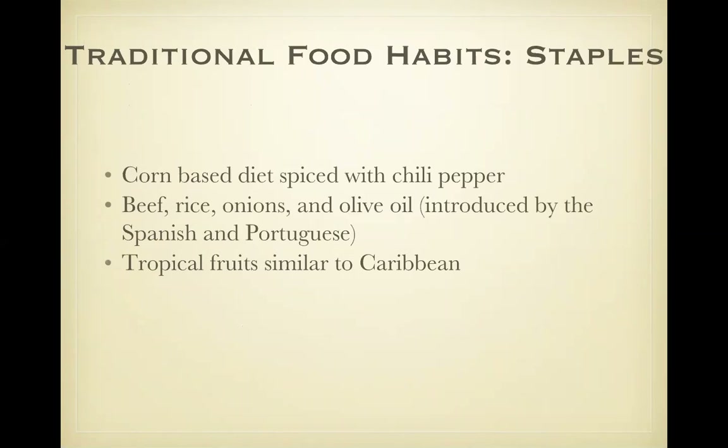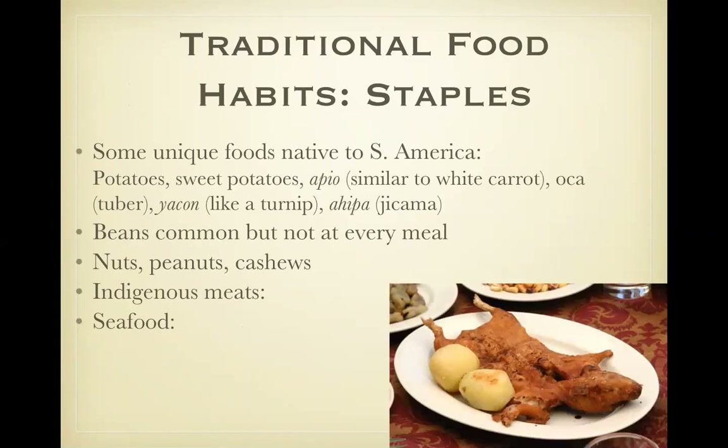Traditional food habits. One of the main starches is corn. They also like rice, beef, onions, and olive oil. Tropical fruits are very similar to the Caribbean. They do have some unique native foods — they grow lots of potatoes, first cultivated by the Incas on mountain terraces. They also eat some interesting meats: iguana, alligator, guinea pigs, wild pig, deer, or rabbit. Guinea pigs are actually served with some potatoes. Seafood is very popular as well: anchovies, tuna, shellfish, clams, lobster, and urchin.